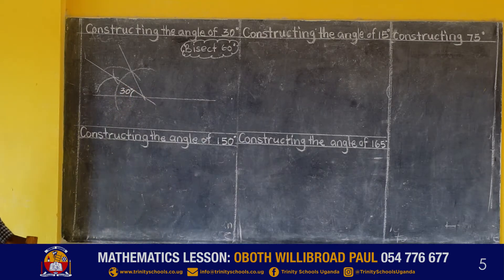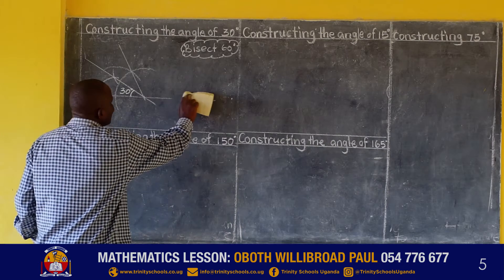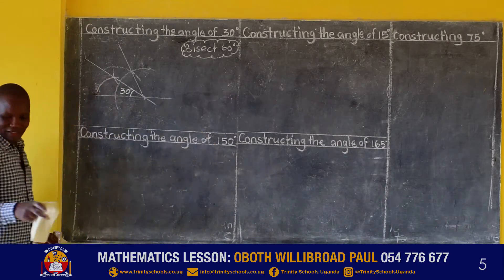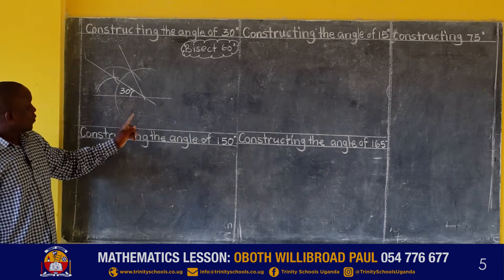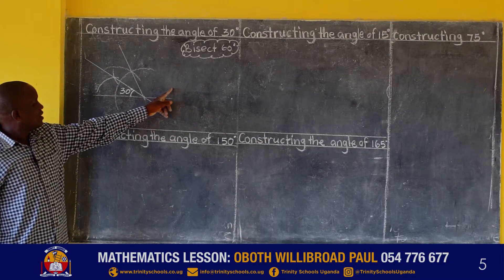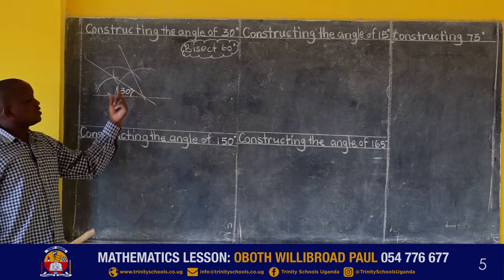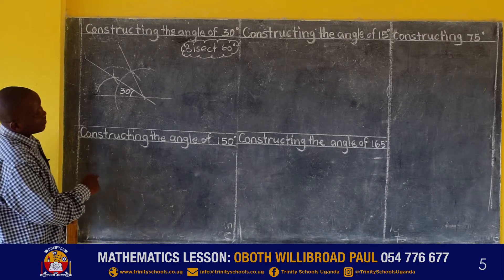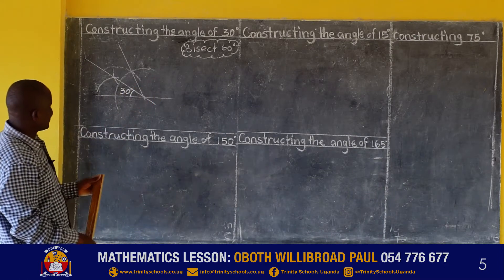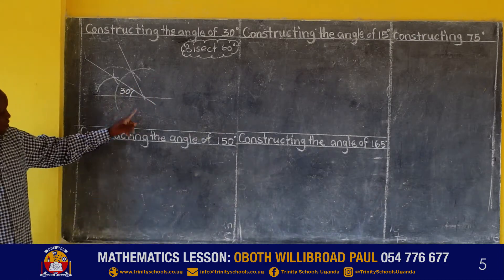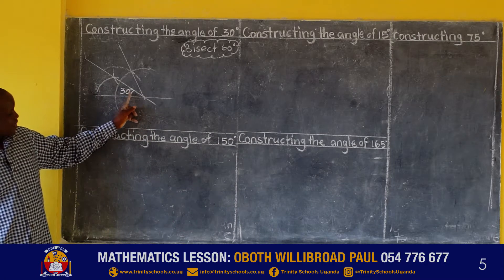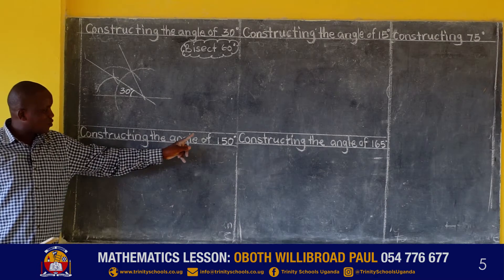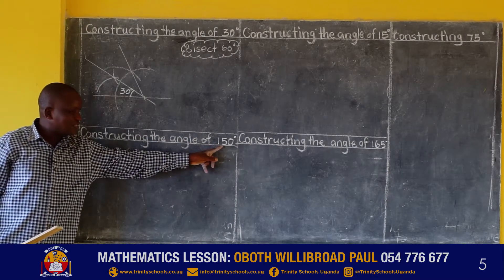That angle is the angle of 30 degrees. Now, before I move to the next angle, we can also construct an angle of 15 degrees. We shall look at that one on the other side. So let us proceed. From 30 degrees, we now have another angle of 150 degrees.